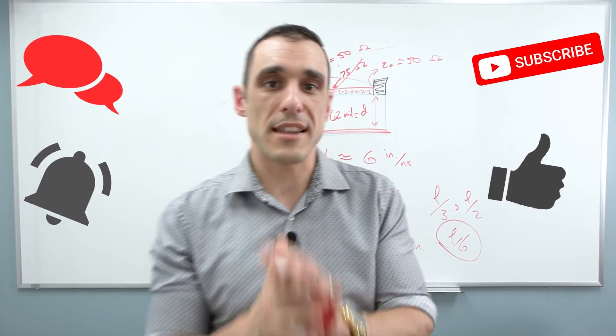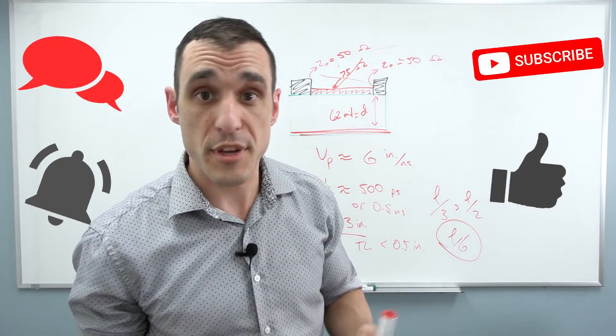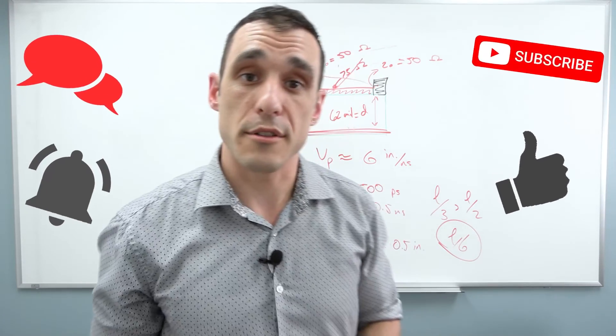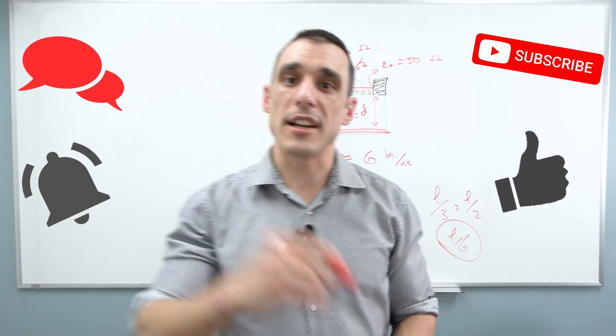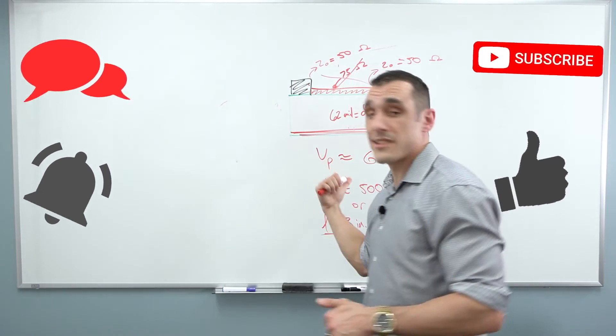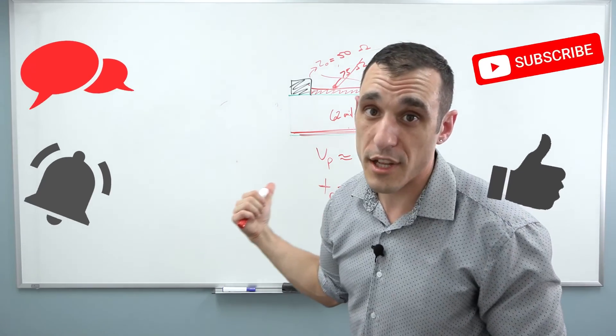When you want to use the best software to route your traces around your board and design your PCB, go get Altium Designer. There's a link in the description. You can download a free trial and check it out. Thanks everybody. And don't forget to call your fabricator and do this little calculation before you start routing on a two layer board.